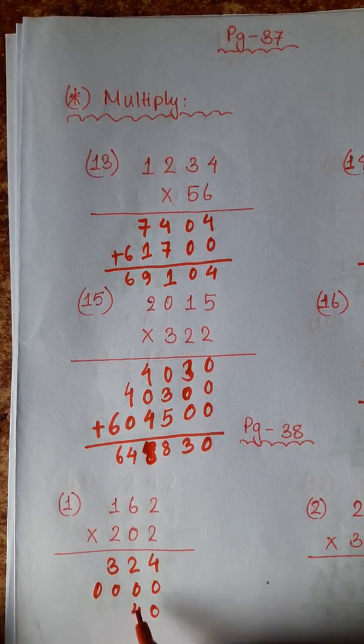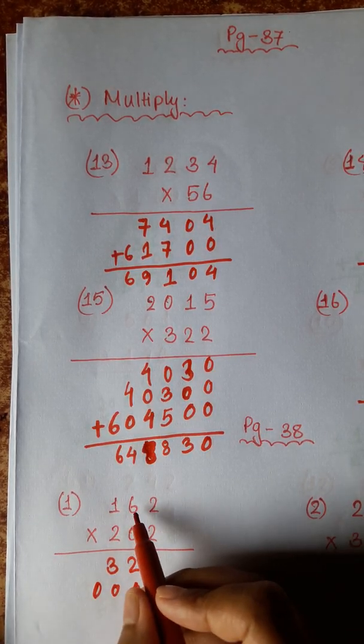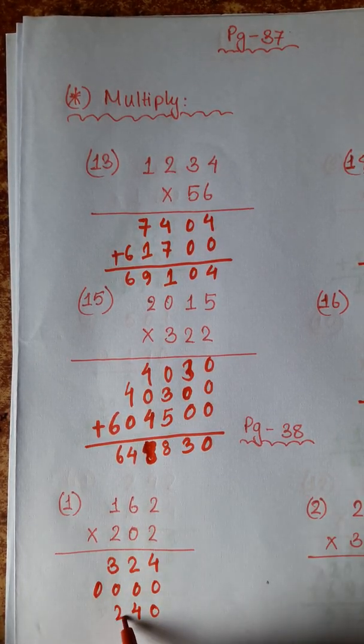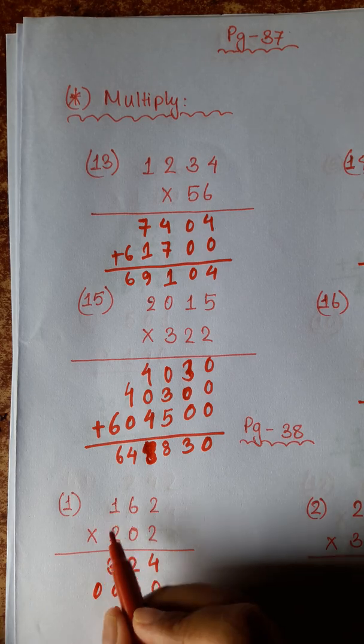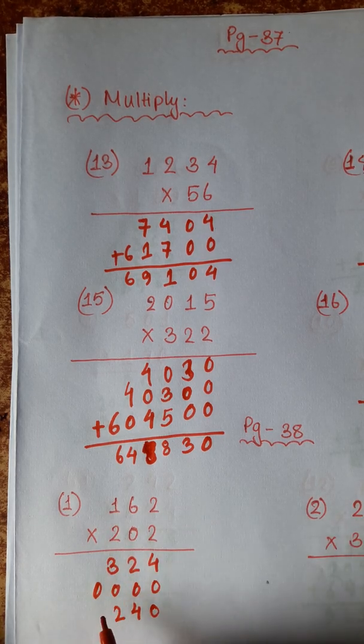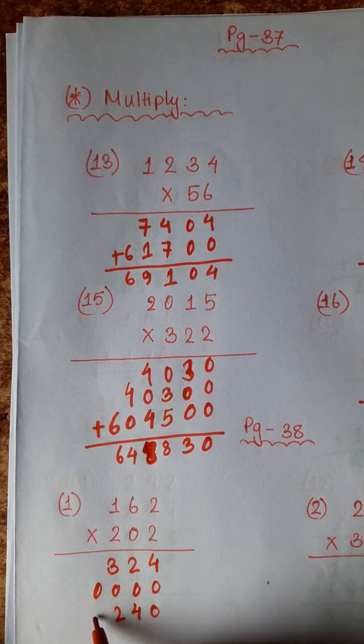2 twos are 4. 6 twos are 12 carry 1. 2 ones are 2 plus 1 is 3.